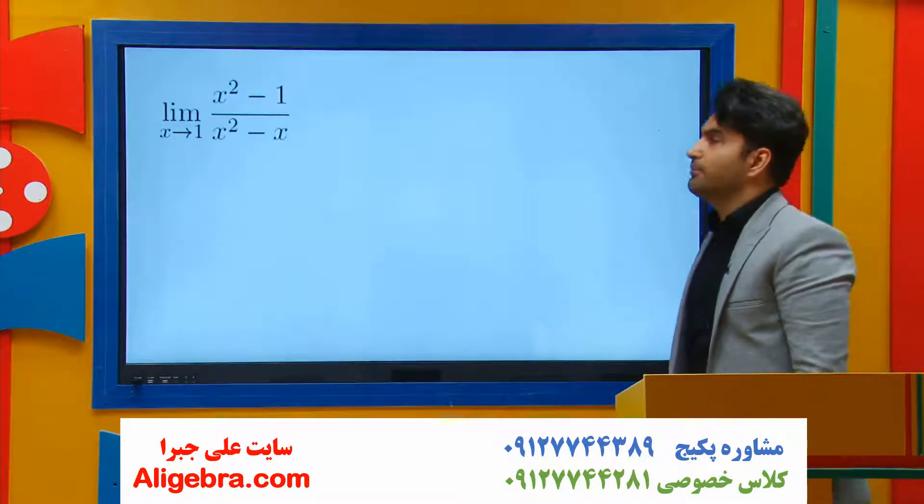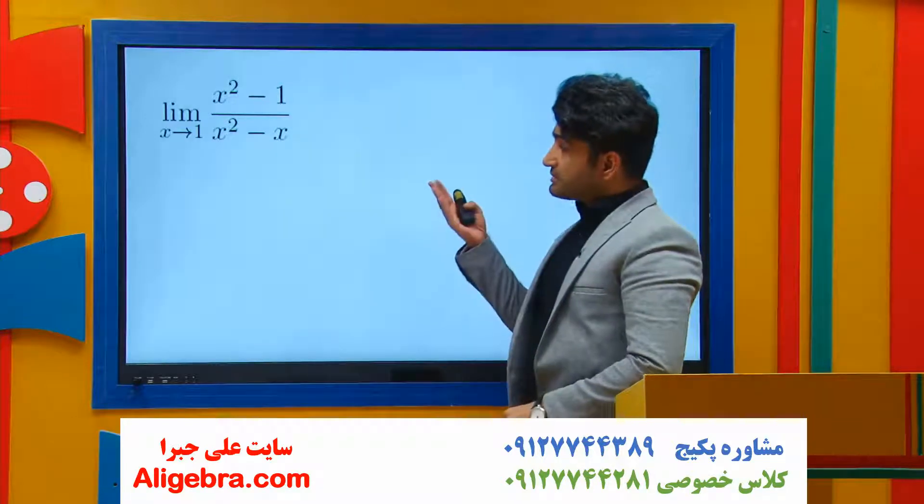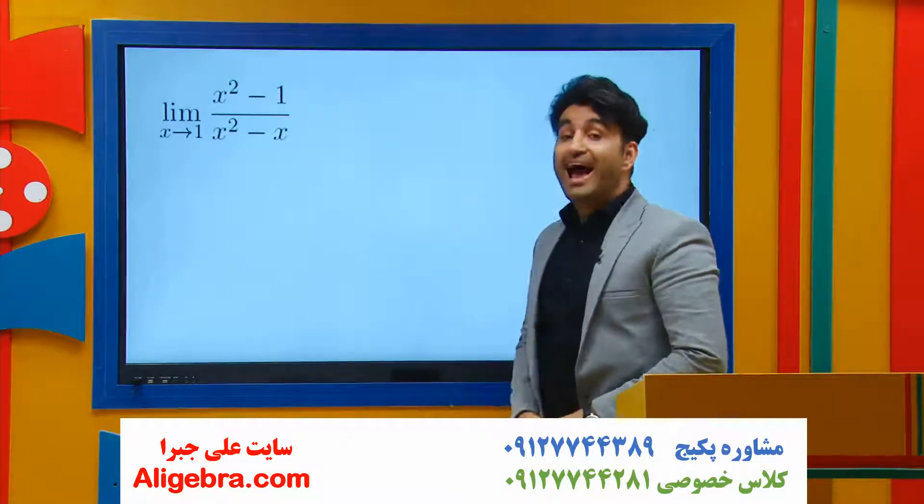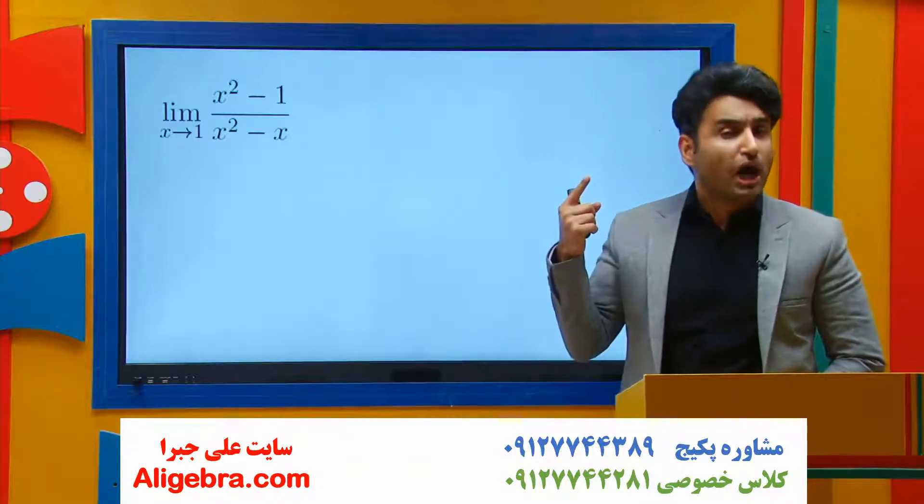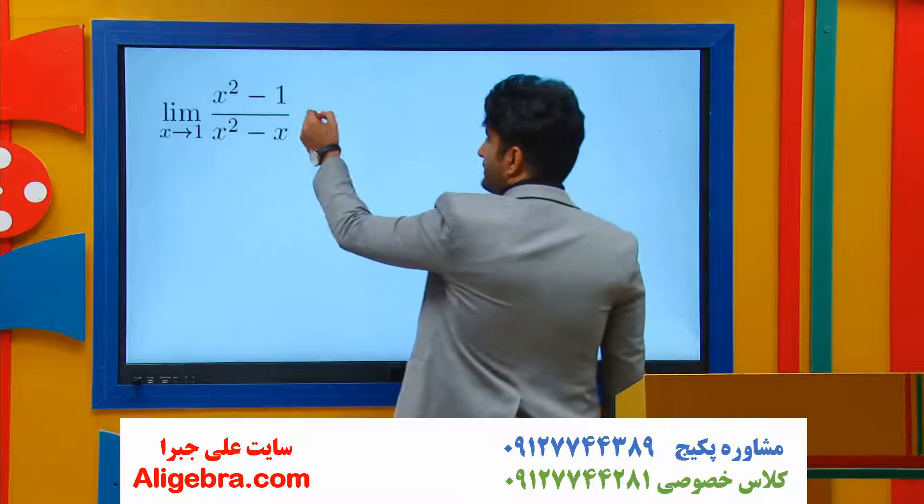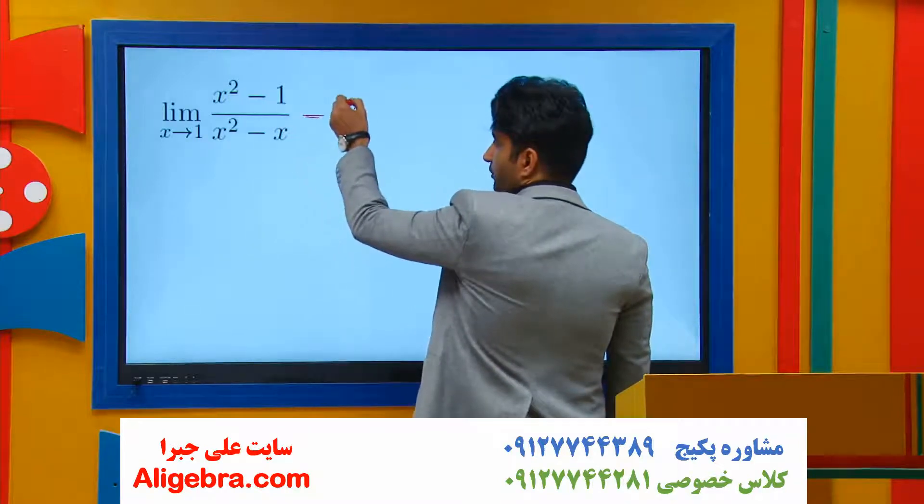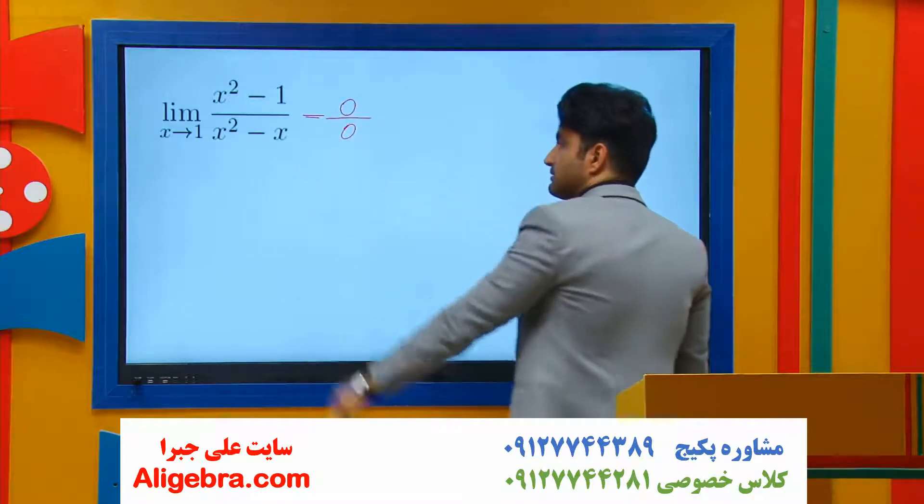Tell me about this problem: x squared minus x on top, x squared minus x on the bottom. Step 1, use direct substitution. Very good. If I replace x on top, I have 0; on the bottom, again, 0.